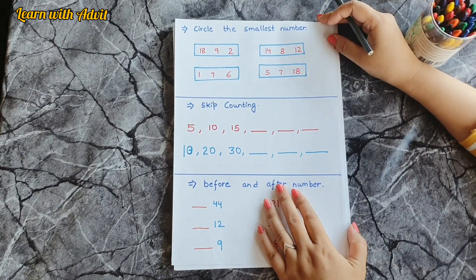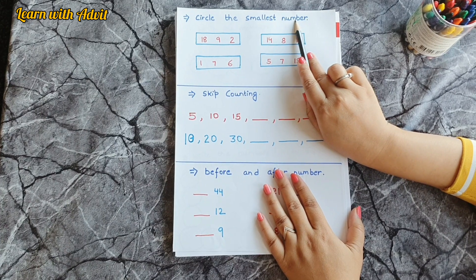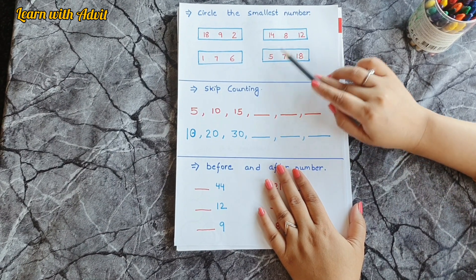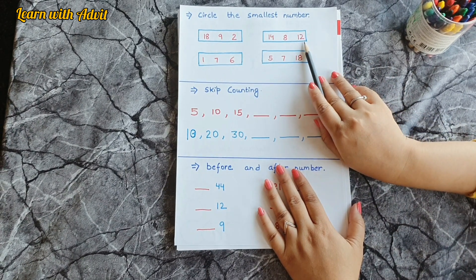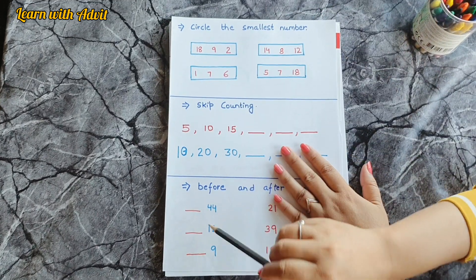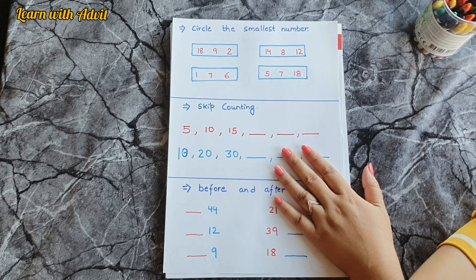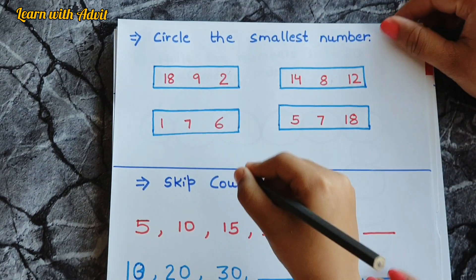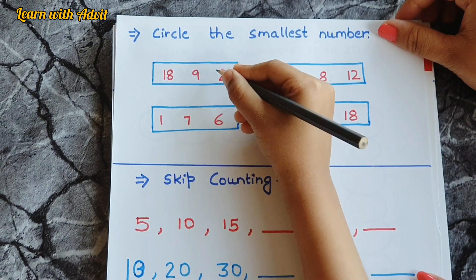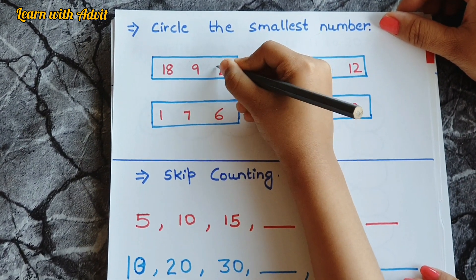In this sheet, what do you have to do? Circle the smallest number. In four rectangles, I have written some numbers. So tell me and circle. In this first one, which number is the smallest? Eighteen, nine, or two? Two. Very good. Circle it.